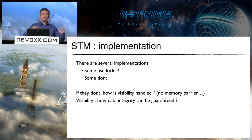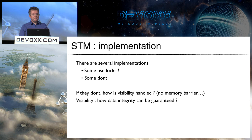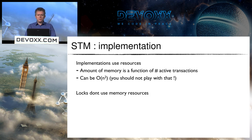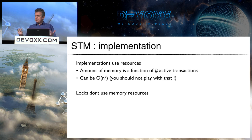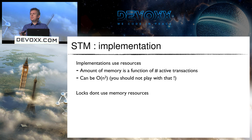A second concern is the memory consumed by active transactions. A transaction is not free — it consumes memory, unlike locks. In some implementations the memory used by the framework increases with the square of the number of transactions, which you absolutely want to avoid in production. So you need to be sure the implementation you choose is the right one — STM patterns are not free to use.